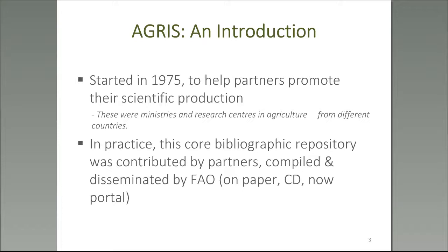A brief introduction: AGRIS was started in the 1970s to help partners promote their scientific production. When we talk of partners, we're talking about gray literature coming from agricultural ministries and research centers from different countries. They would share their records with AGRIS, and AGRIS would have these records as a way to know what was scientifically produced. In practice, this core bibliographic repository was contributed by partners — it was really a partnership arrangement.